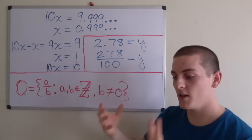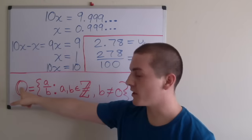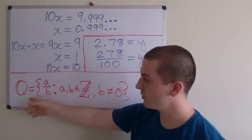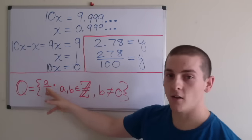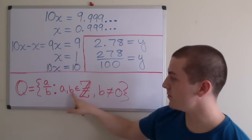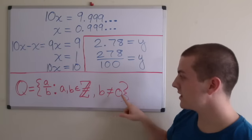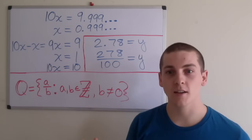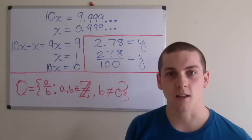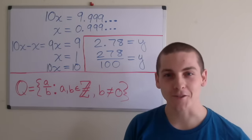A convenient way to define these is denoted with a Q, and this is called set builder notation. We have Q equals the set containing elements a divided by b such that a and b are elements of the integers, with the only condition that b cannot equal 0. If you divide by 0, it's undefined — it doesn't mean anything. So if you're interested in that, I recommend Googling it.